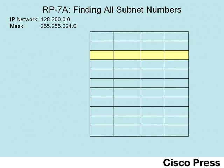Let's take a look at the example. We'll use IP network 128.200.0.0, which is a Class B network, and mask 255.255.224.0. That means there are 16 network bits because it's a Class B network, three subnet bits, and 13 host bits.